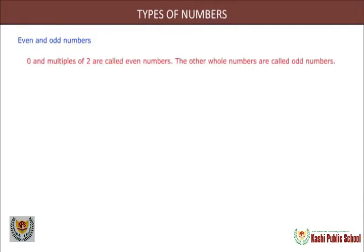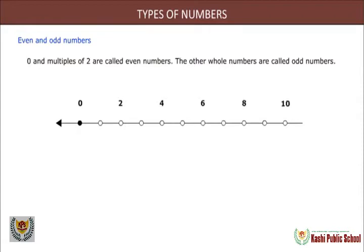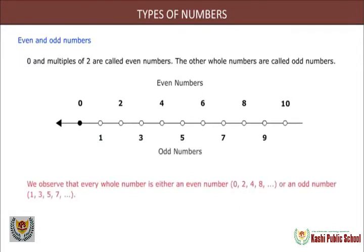Even and odd numbers: zero and multiples of two are called even numbers, and the other whole numbers are called odd numbers. The numbers zero, two, four, six, eight and so on are even numbers, and the numbers one, three, five, seven, nine and so on are odd numbers. We observe that every whole number is either an even number or an odd number.